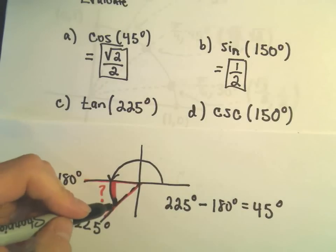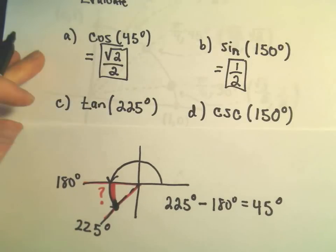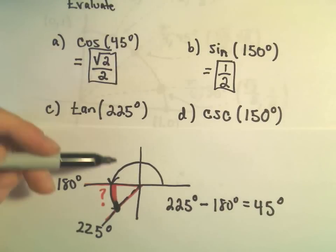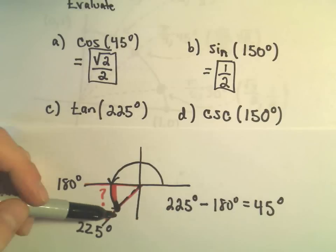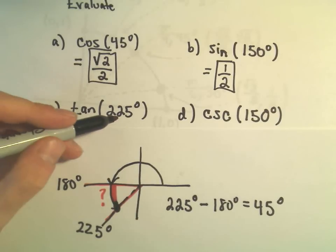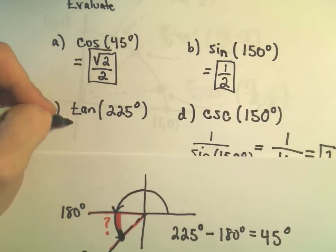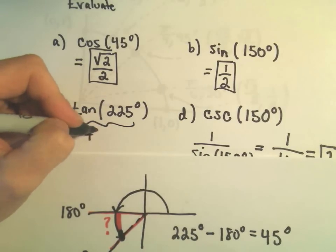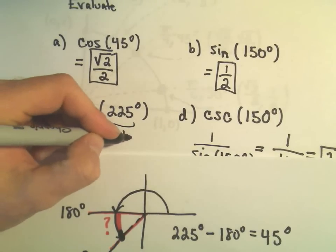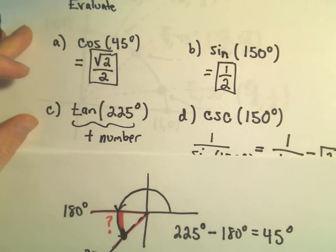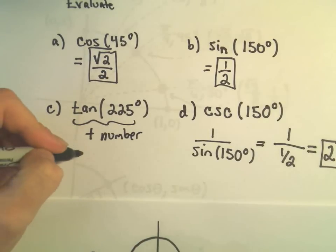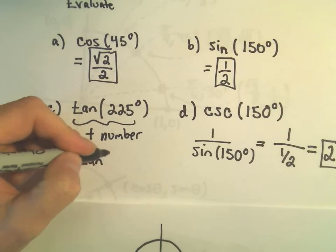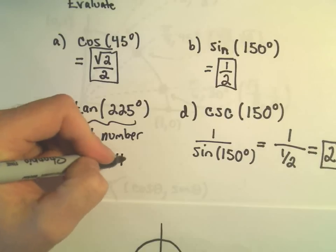So okay, I think in this quadrant 3, would tangent be positive or negative? And in quadrant 3, since tangent is the ratio of the y-coordinate to the x-coordinate, they would both be negative. So tangent of 225 degrees is definitely some positive number. So to evaluate tangent of 225, I replace the original angle with its reference angle.